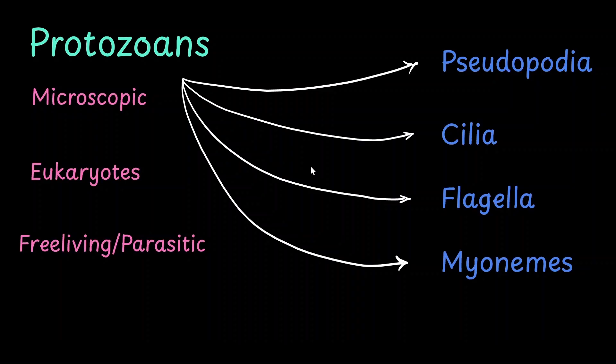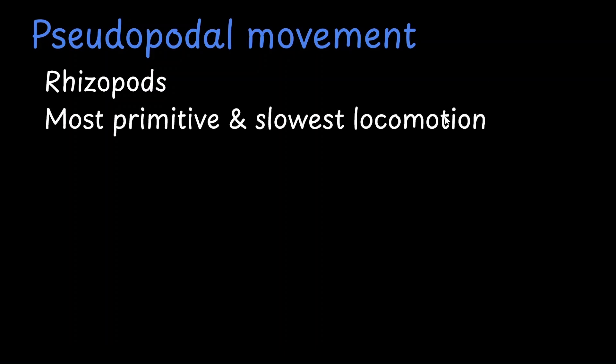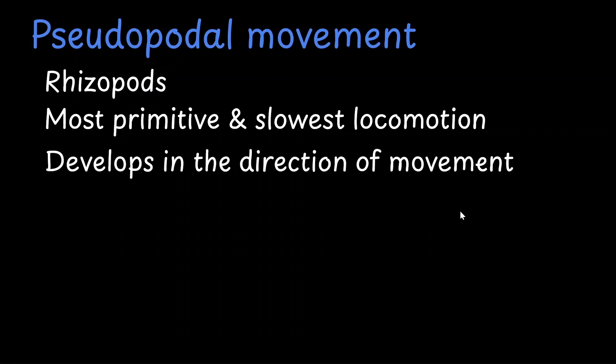In this video we are going to see how a protozoan moves using pseudopodia. The movement using pseudopodia is called pseudopodal movement, and it is specifically seen in rhizopods — a group of protozoans that show amoeboid movement using pseudopodia. Pseudopodia are the finger-like projections that come out of the amoeba's body. Pseudopodal movement is considered to be the most primitive and the slowest mode of locomotion, and the pseudopodia develops in the direction of movement.